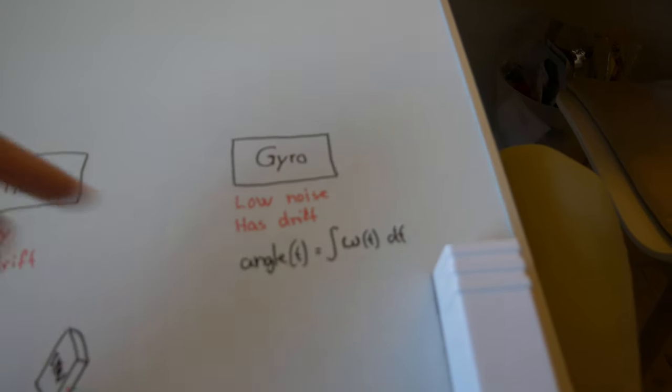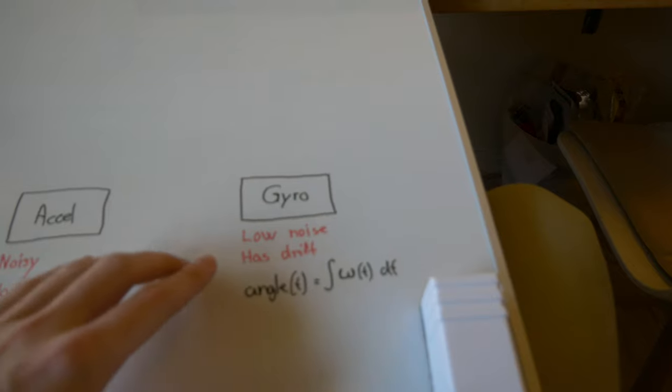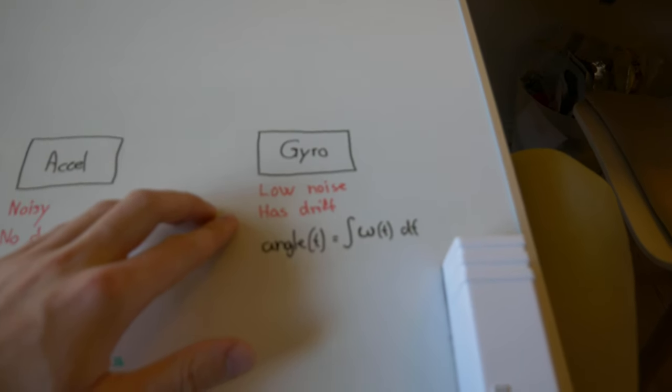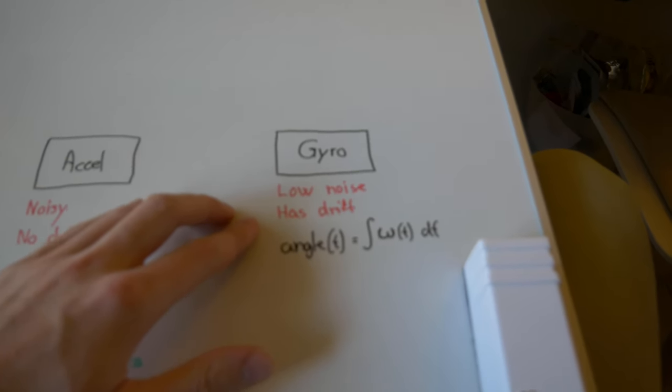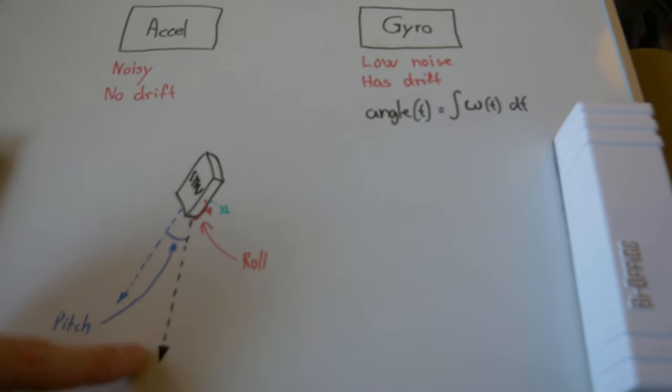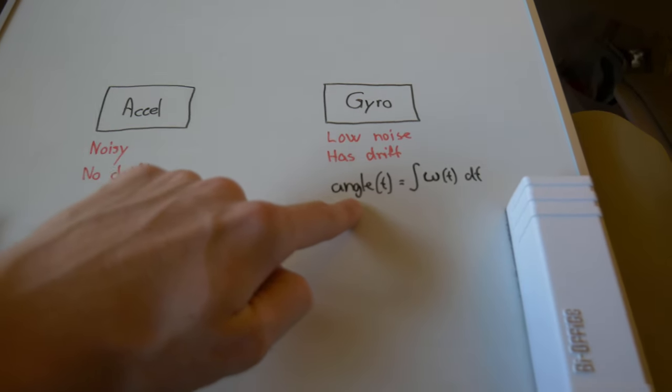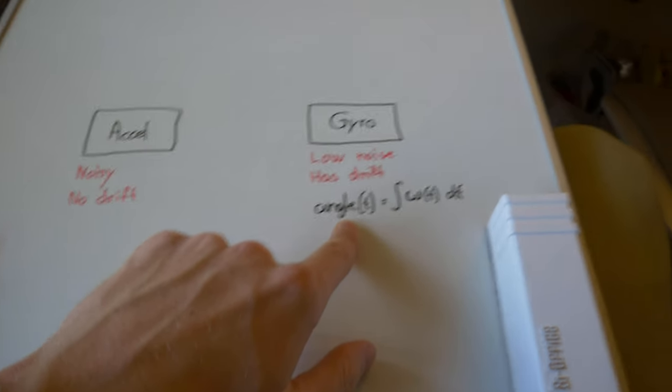The gyro is constantly outputting the rate that it's changing. In order for us to get the absolute orientation, which this system can do in just one measurement, we will have to integrate the angle over time.